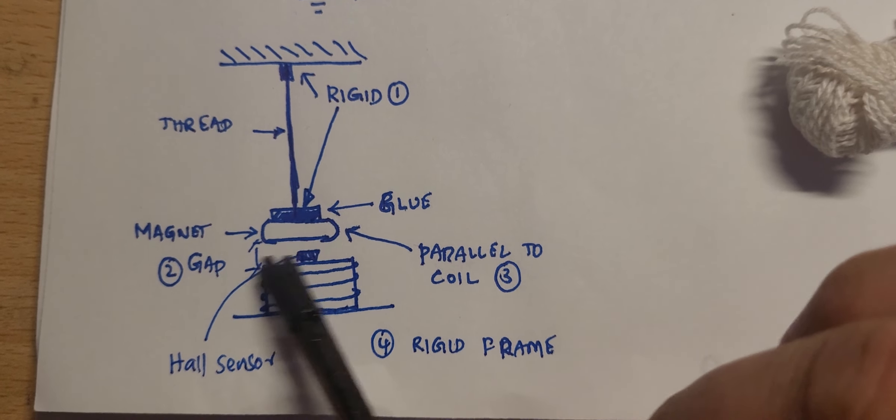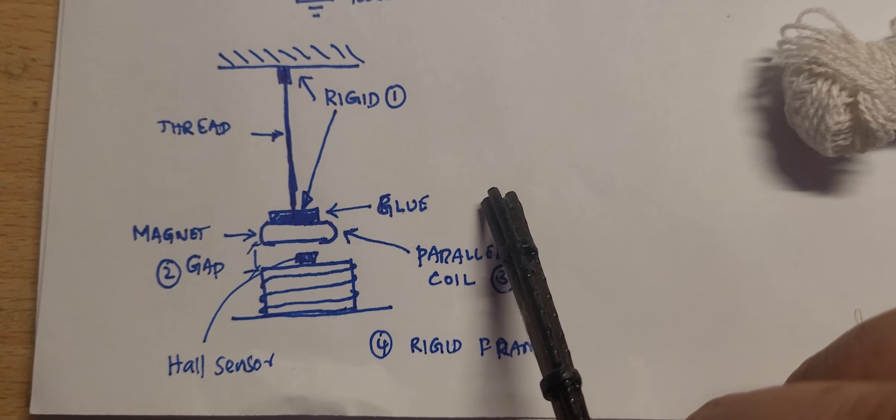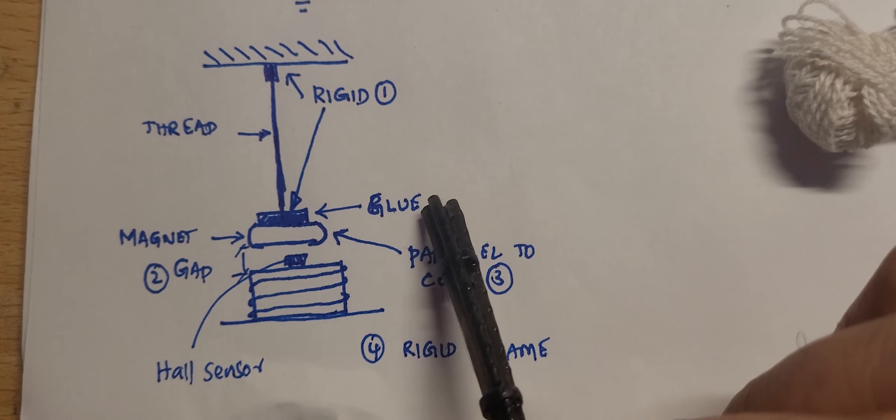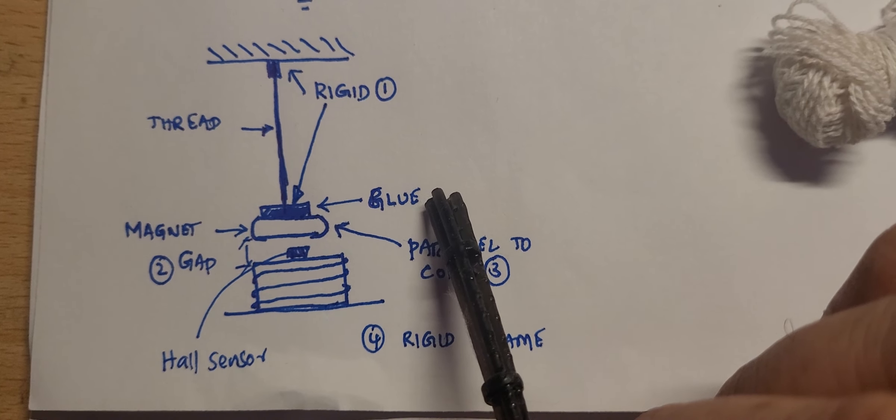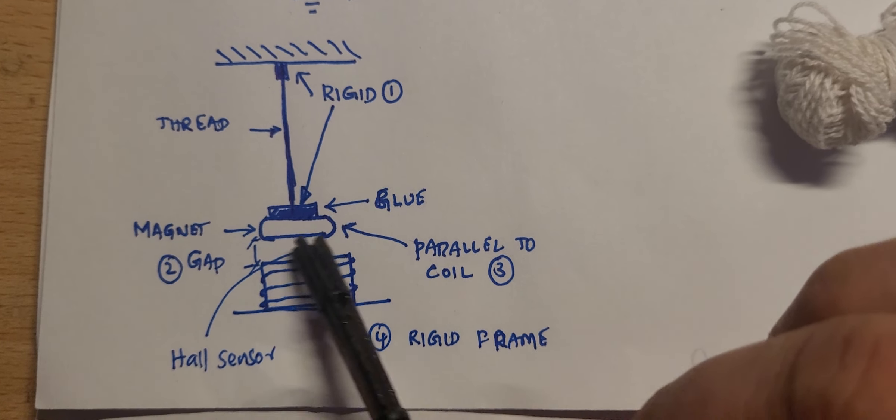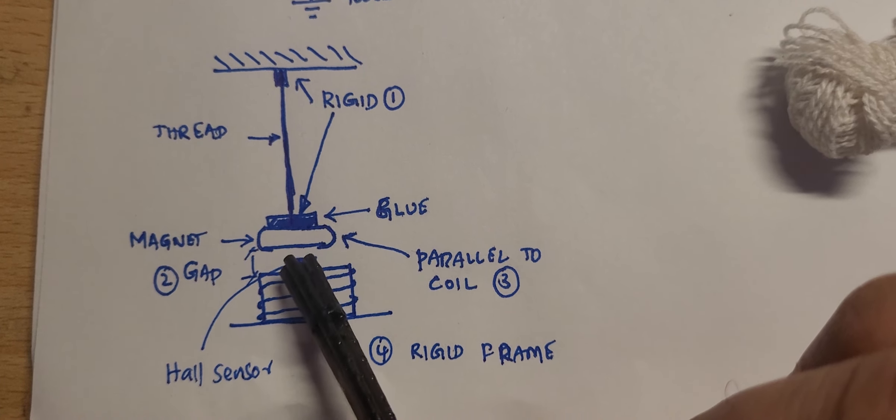When the magnet comes from this position close to the sensor, the coil is triggered. It creates a magnetic field, creates a south pole here, and you have a south pole here. They repel each other so the magnet is pushed to this side.